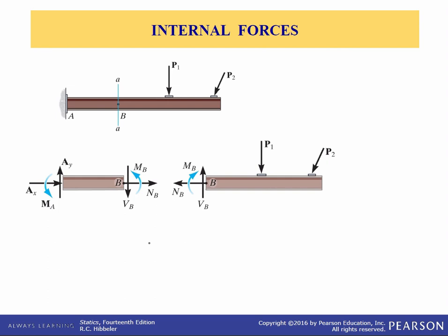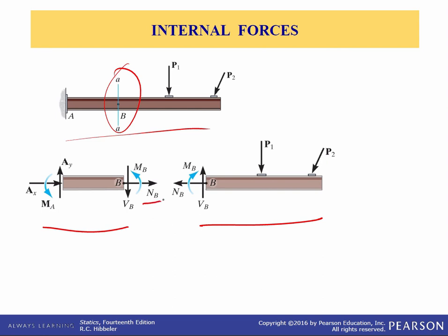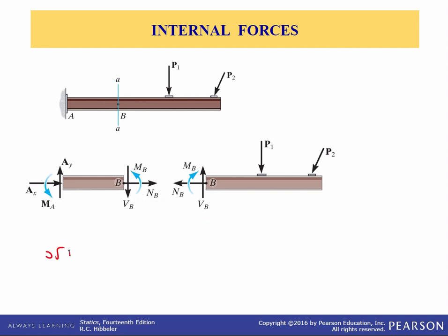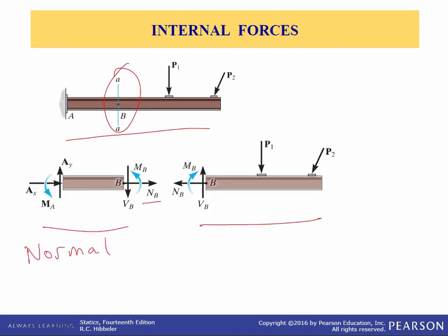To illustrate this method, consider this cantilever beam here. If the internal loading acting on the cross-section of the beam at B is to be determined, we'll pass an imaginary section AA through the beam, and then separate the beam into two segments. We'll draw the free body diagram of each segment. The force component N sub B, that acts perpendicular to the cross-section, is termed the normal force.